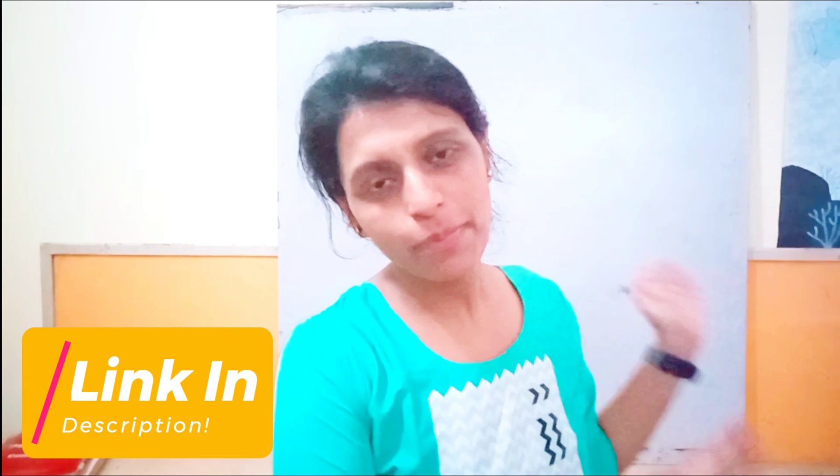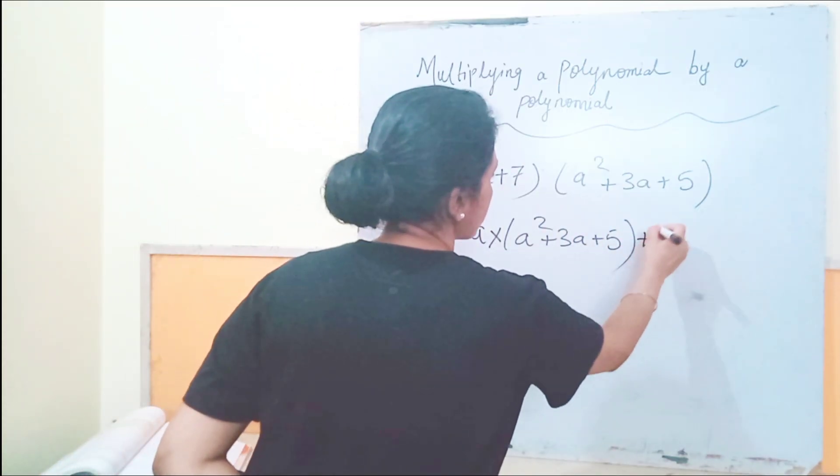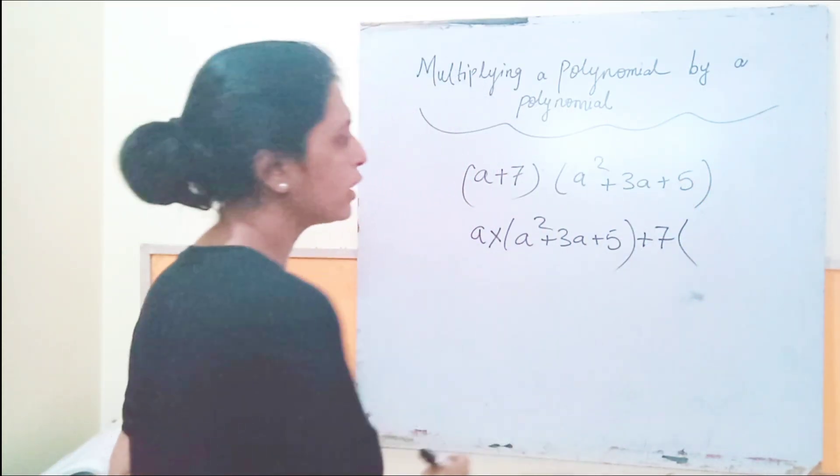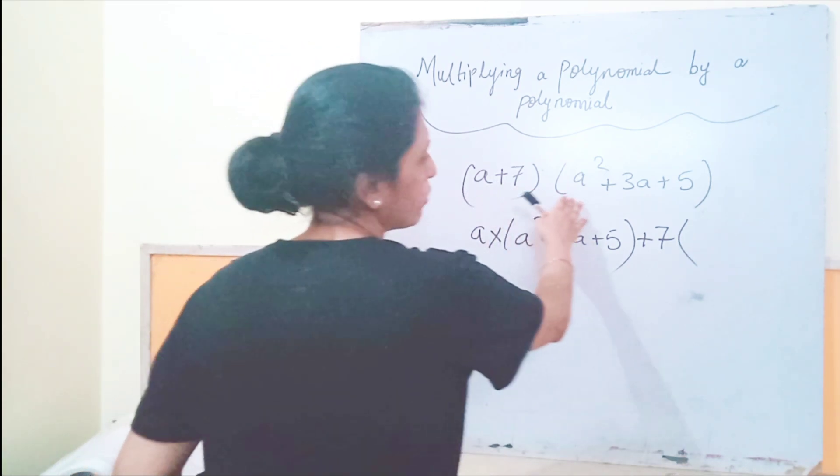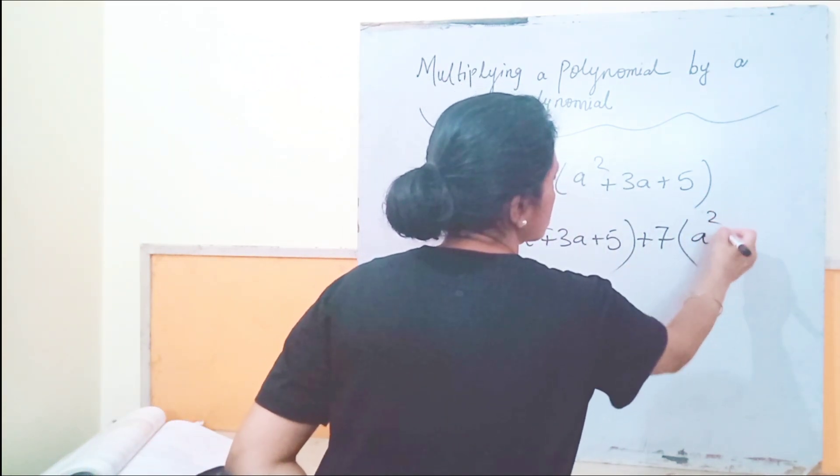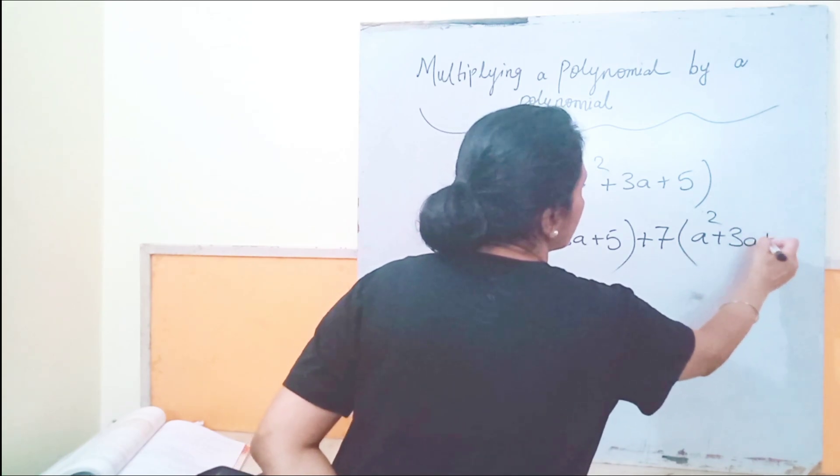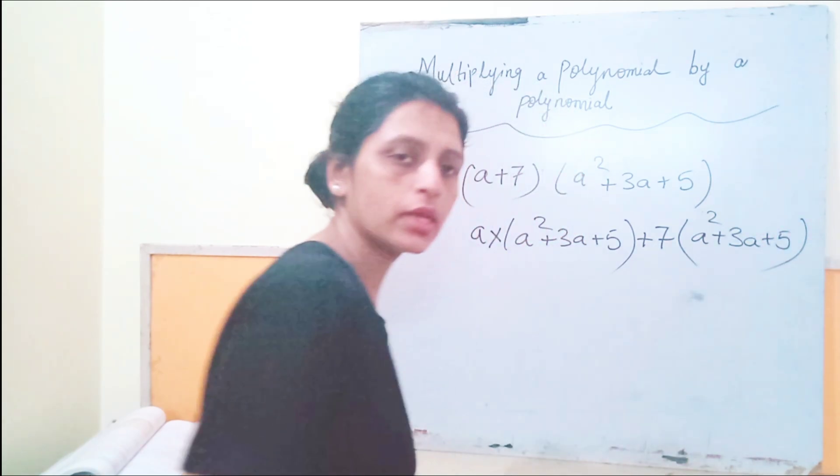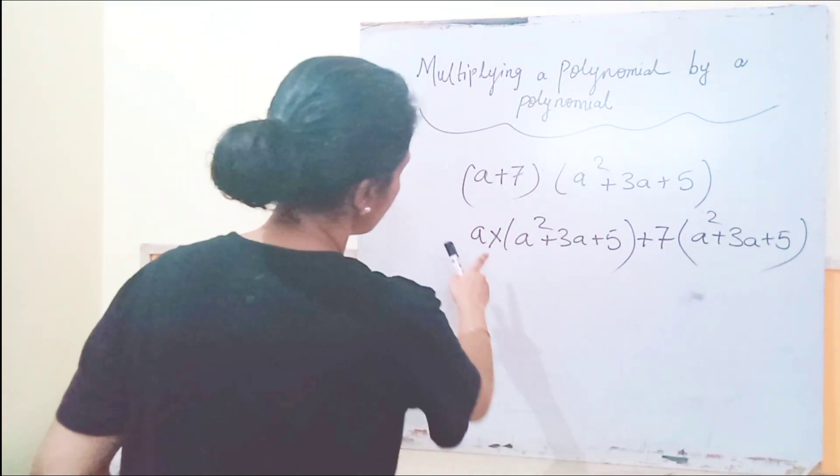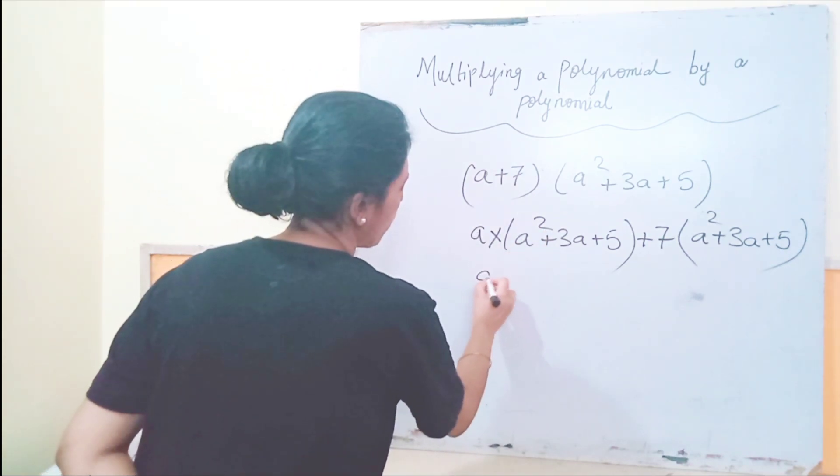Plus 7. So plus 7, okay, it will be multiplied with all the terms of this trinomial a squared plus 3a plus 5. Okay, now a multiplied with a squared.